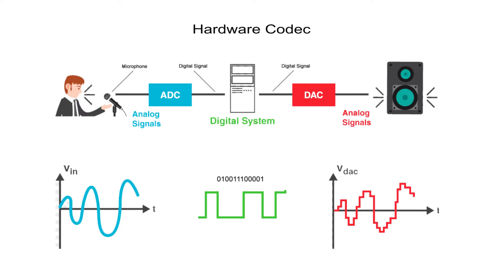Typically, these containers contain codecs. A codec is called coder-decoder or compressor-decompressor. We have two types of codecs: hardware codec and software codec. A hardware codec converts an analog signal into a digital signal of zeros and ones, which a digital device can understand, and then turns this digital signal back into an analog signal as output.